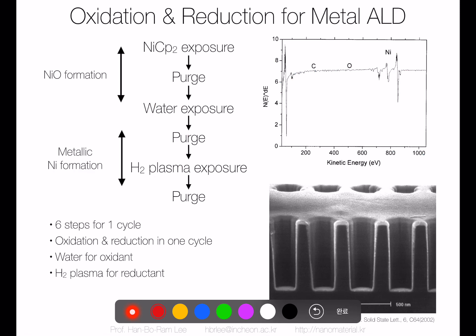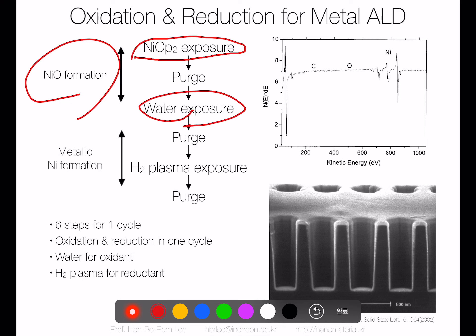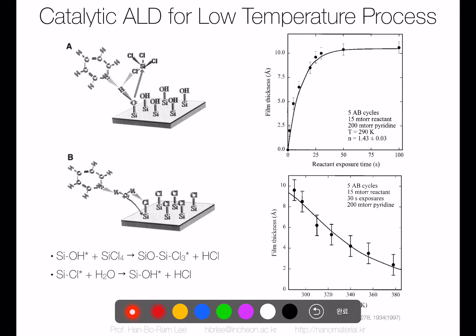An interesting example is the double counter reactant approach. For nickel deposition, a nickel precursor with water deposits nickel oxide in one set of steps; then ammonia plus hydrogen plasma is exposed, reducing nickel oxide to metallic nickel film. Interestingly, this six-step ALD process can produce a pure metallic nickel film with no oxygen — a very uniform and interesting result.